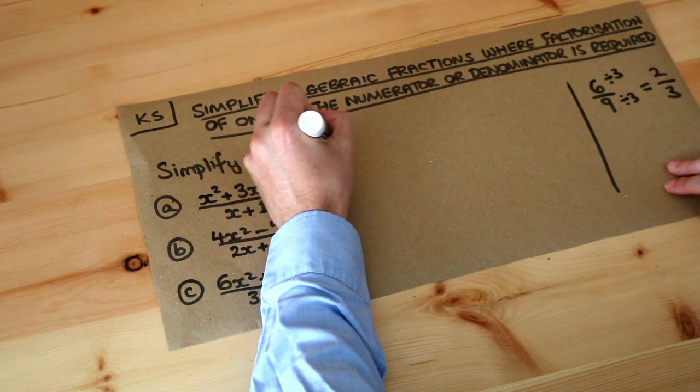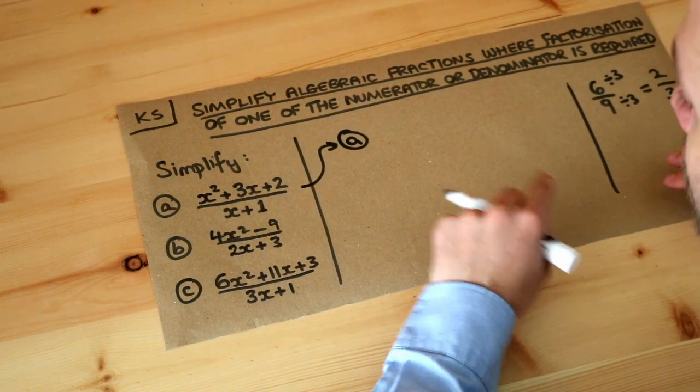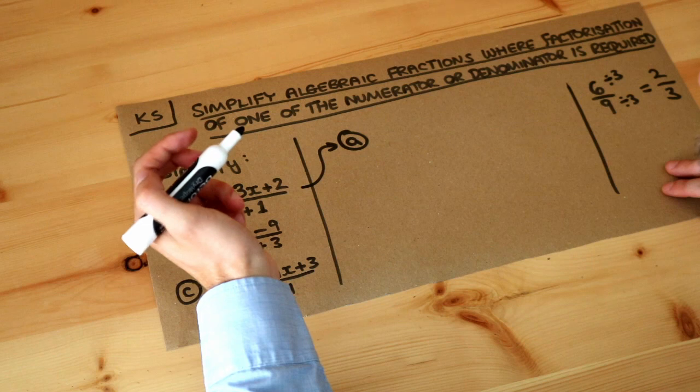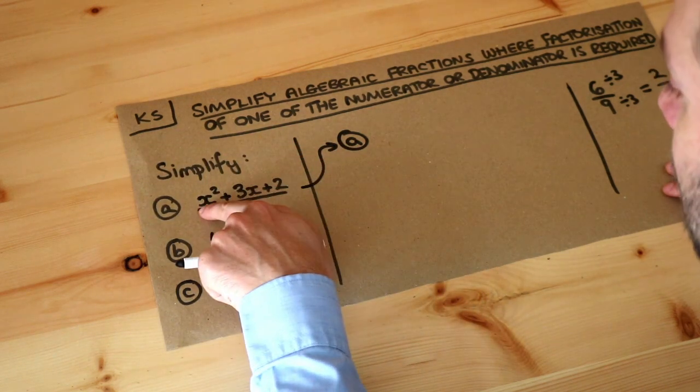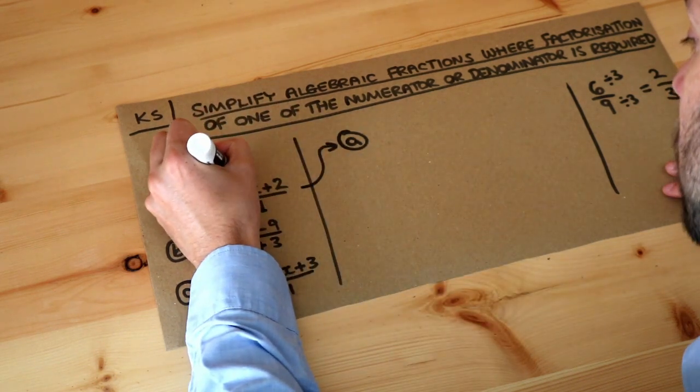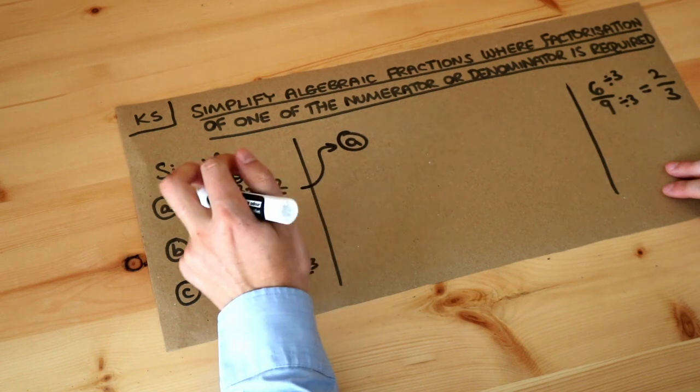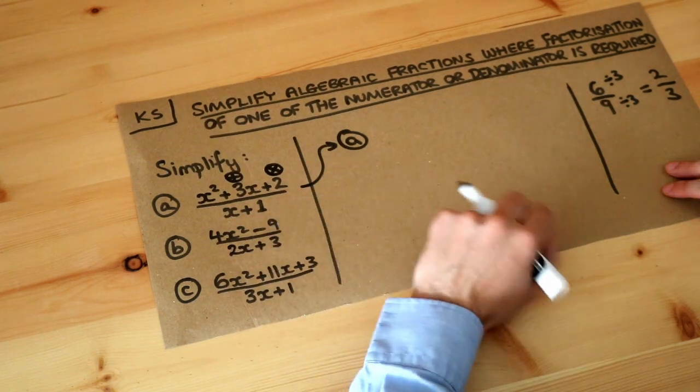So let's deal with this first fraction, and if you've forgotten how to factorize these things then do look at my videos on factorizing quadratics. Now do you remember when we have x squared plus something x plus something, we need to find two numbers which add to give the middle number, the 3, and times to give that last number of 2, the constant term.